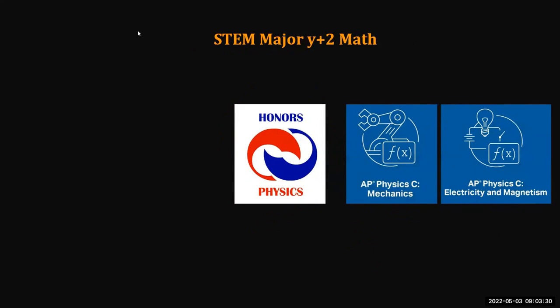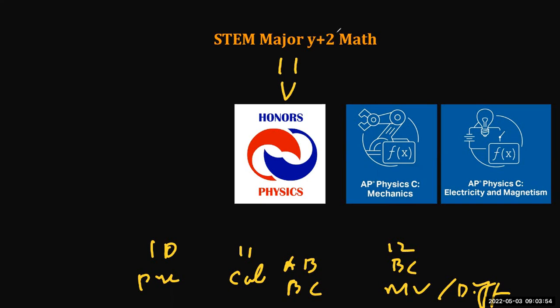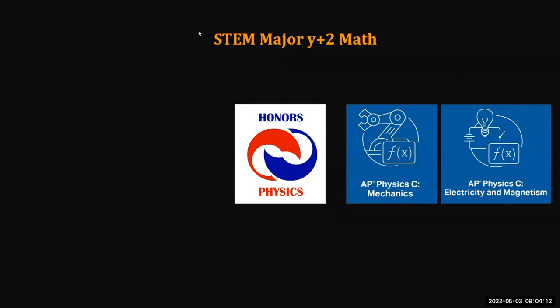But if you actually have year plus two math, that means in 10th grade you take pre-cal, 11th grade you take calculus A, B, or BC, and 12th grade you take BC or multi-variable or differential equation, something like that. Then you can take either honors pre-cal in 11th and then AP calculus in 12th grade. And you can also take physics one and two in 11th and then AP physics in 12th grade. This is year two curriculum for the STEM year plus two. And year plus two is good enough for many, many good universities and programs already.